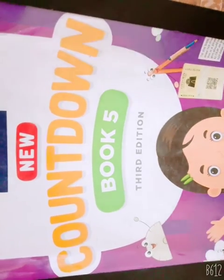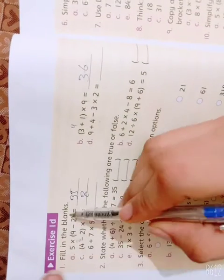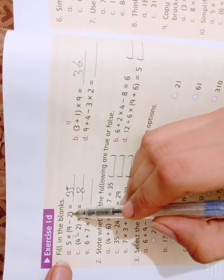Now open your book and come to page number 22. Page number 22, Exercise 1D. First of all, fill in the blanks. 5 multiplied by 9 minus 2. First of all, we will solve our brackets.